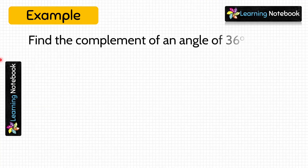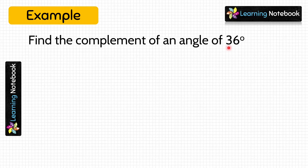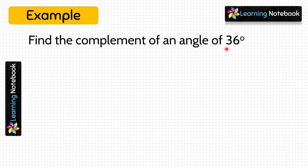Now let's do a related question. Find the Complement of an angle of 36 degrees. Students, we just learned that two angles are said to be Complementary Angles when the sum of their measures is 90 degrees. Here, we are given the measure of one of the angles as 36 degrees, and we have to find its Complement Angle.